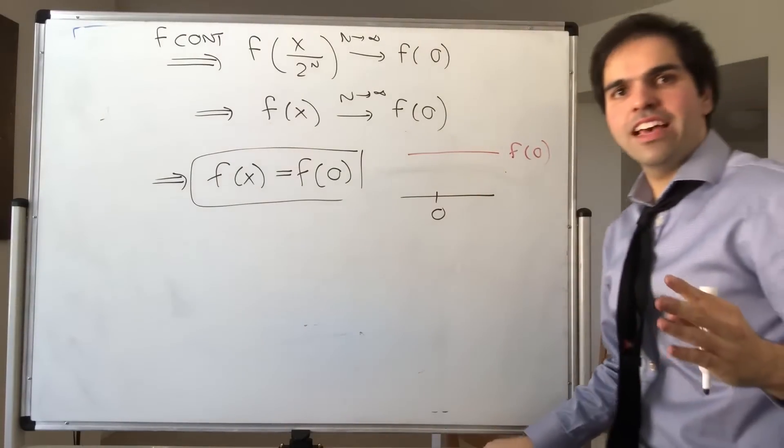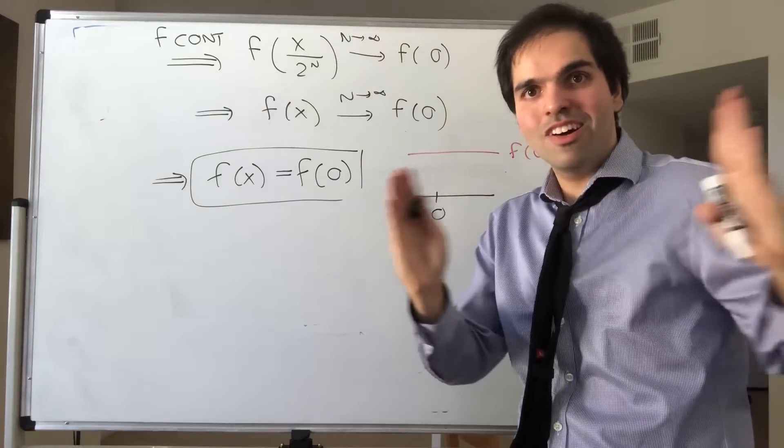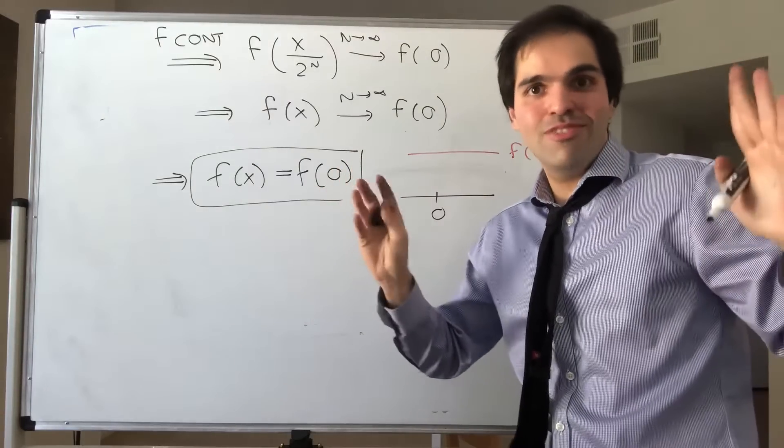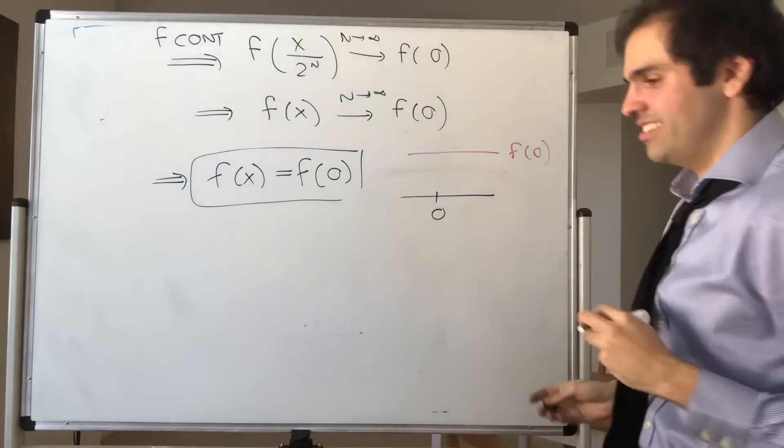And in fact, it makes sense, because what is f of 2x? You're just compressing the function. So the only way, if you compress it and it's still continuous, it just means it's constant.